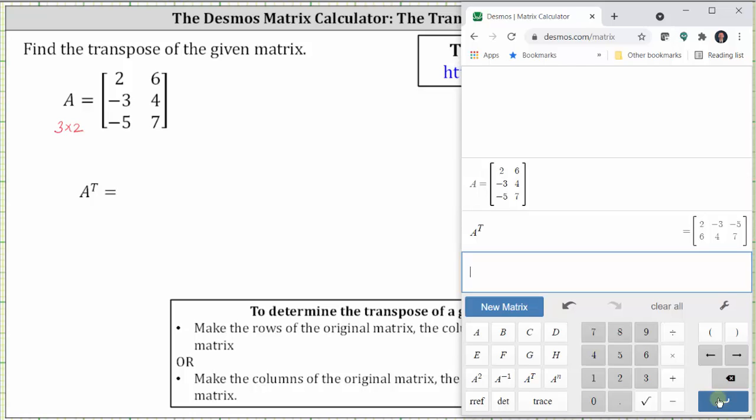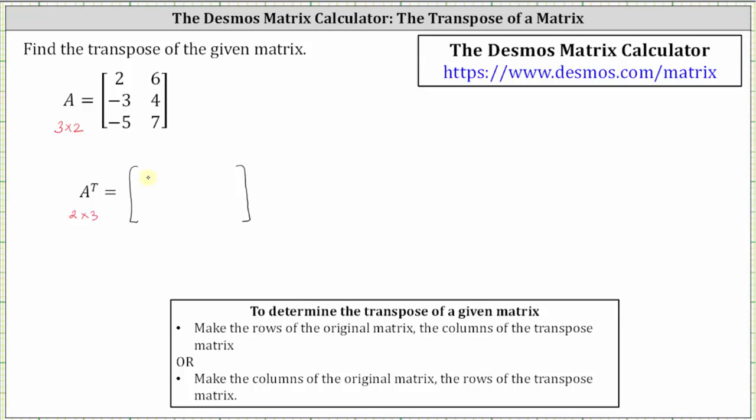Let's go ahead and record this. The first row in A transpose is two, negative three, negative five, and the second row is six, four, seven.